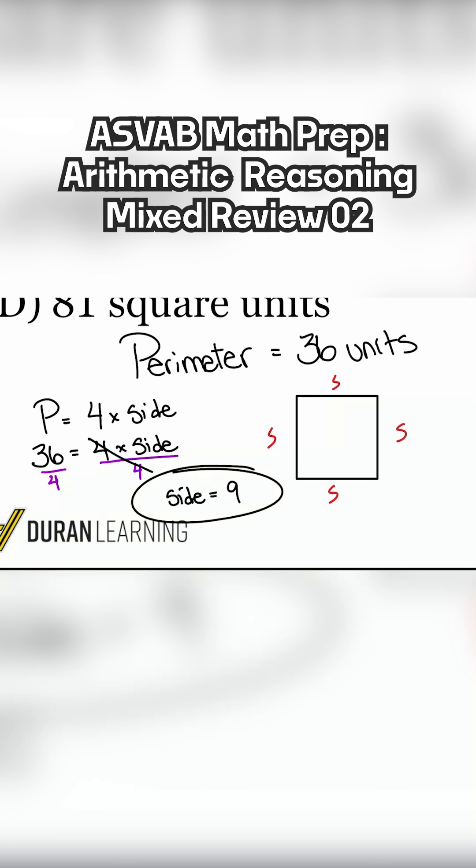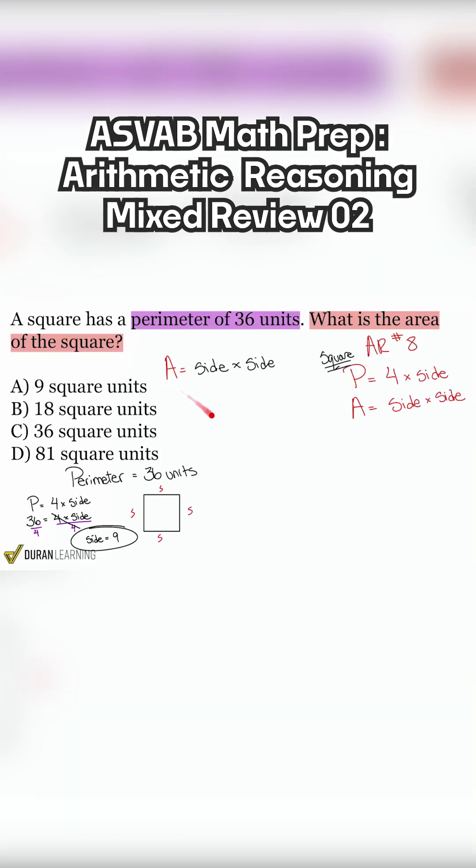Now here's the problem. We're not done. We have the side being nine. We're trying to get the area. And so to get the area, remember we are multiplying the side times the side. So we have to plug it into the right formula. This was a detour to get the side.